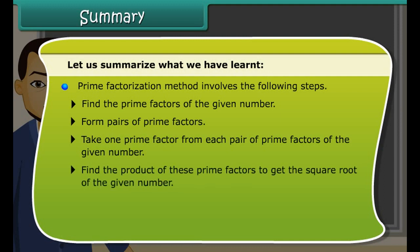Prime factorization method involves the following steps. Find the prime factors of the given number. Form pairs of prime factors. Take one prime factor from each pair of prime factors of the given number. Find the product of these prime factors to get the square root of the given number.